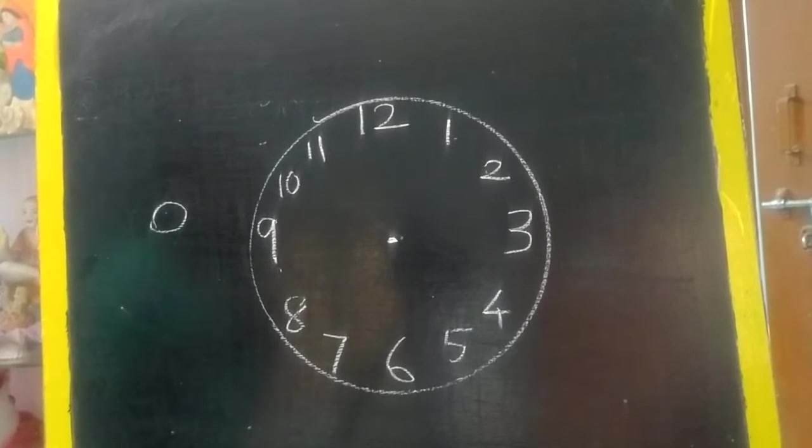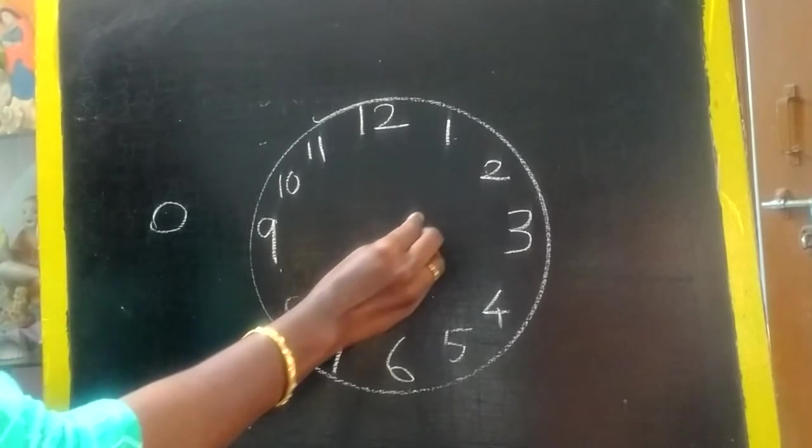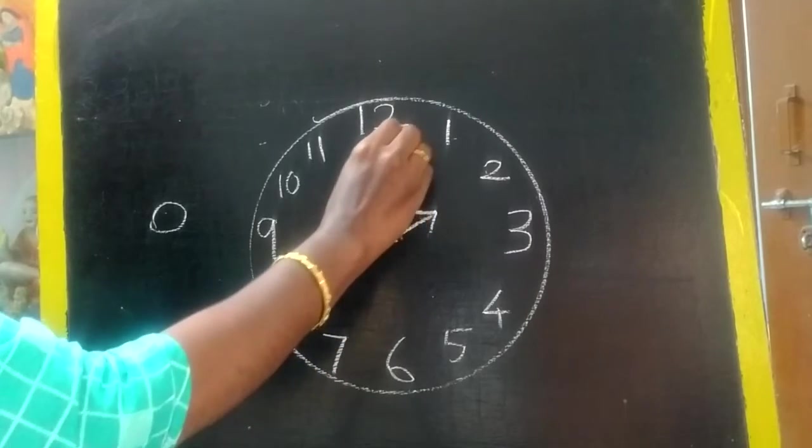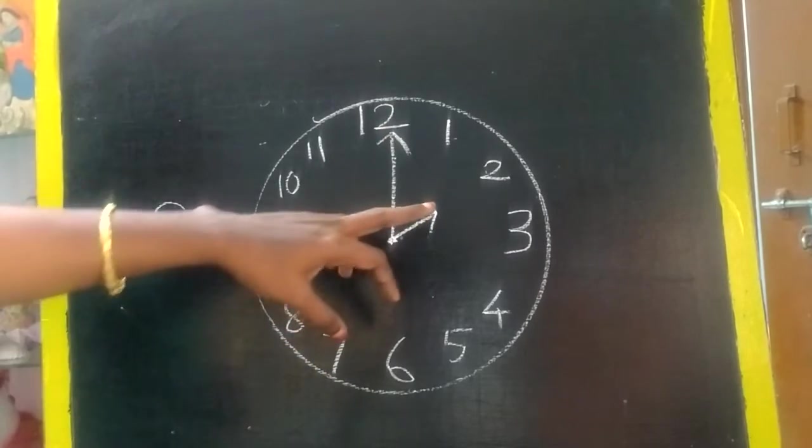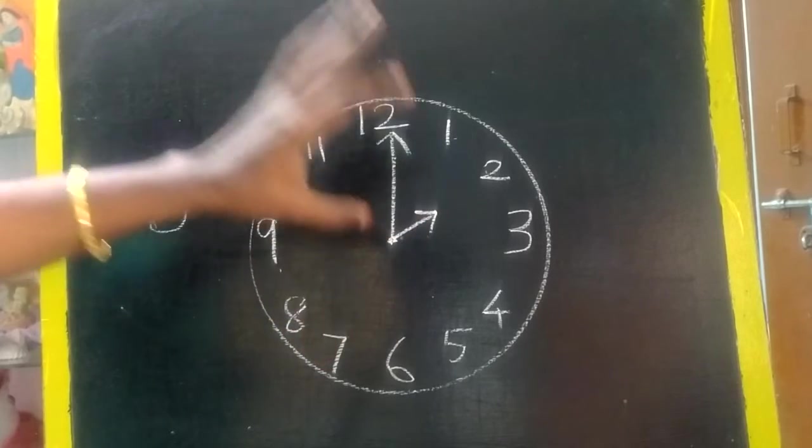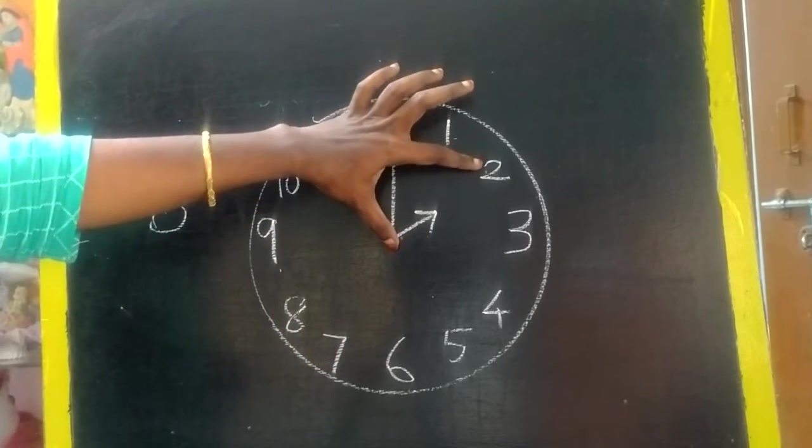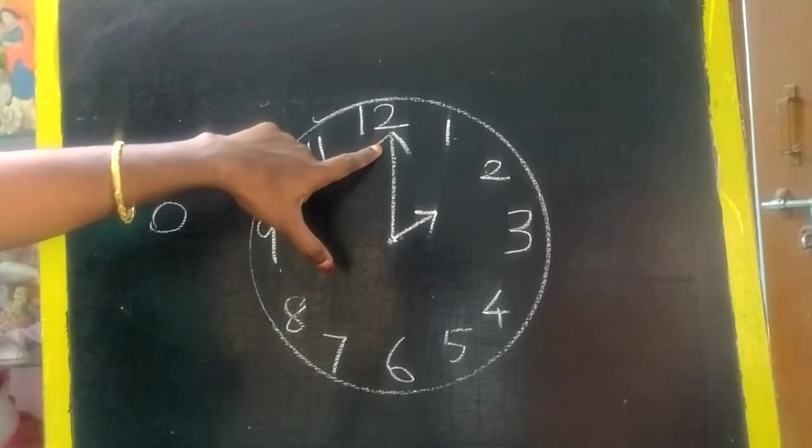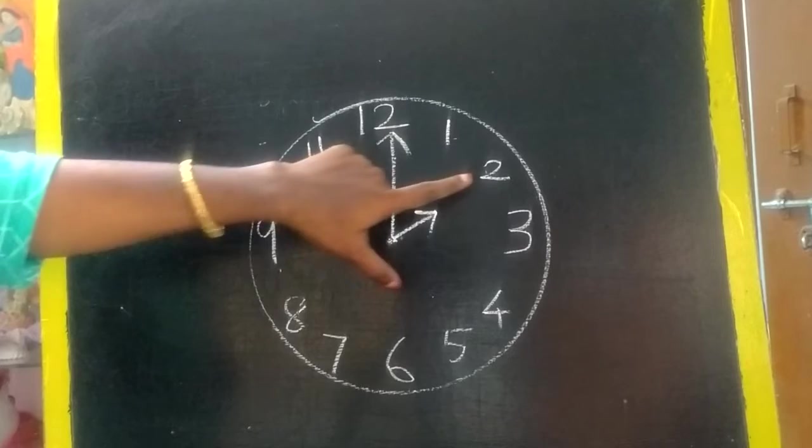In a clock you can see two hands, right? One is short, one will be long. Parents please show the real clock. One will be short, one will be long. Always you have to read the short hand first. The number which is showing, see, suppose the number here, this is short hand and this is long hand. Always first read the number shown by the short hand. So 2, and the long hand is 12, means it is called as o'clock. So what is the time now? 2 o'clock.